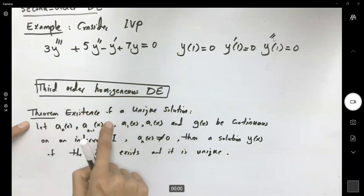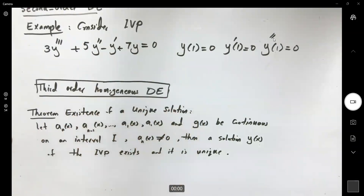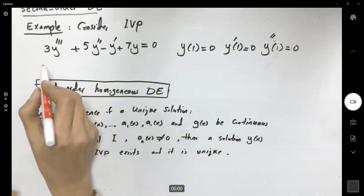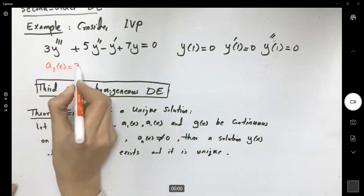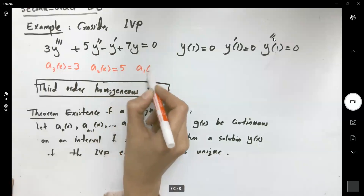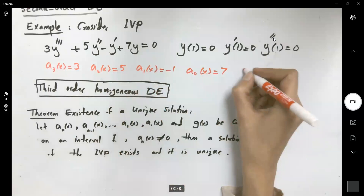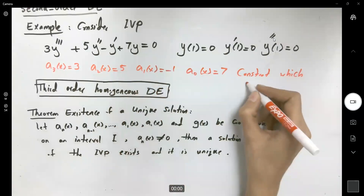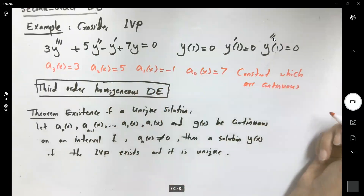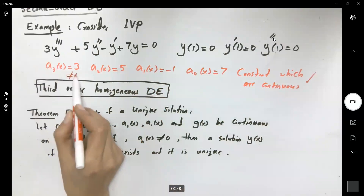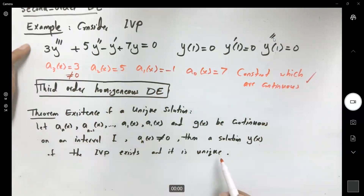Does it satisfy the theorem conditions? The theorem says the coefficients must all be continuous on an interval. Here a_3(x) = 3, a_2(x) = 5, a_1(x) = −1, and a_0(x) = 7 — these are all constants, which are continuous. Zero is also constant. The leading coefficient a_3 = 3 is not zero, so this condition is met as well. Therefore, we can definitely find a unique solution for this initial value problem.